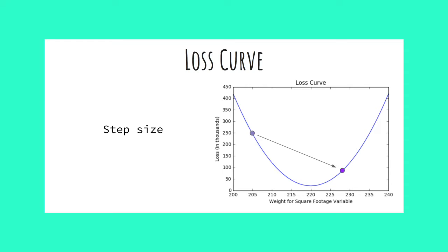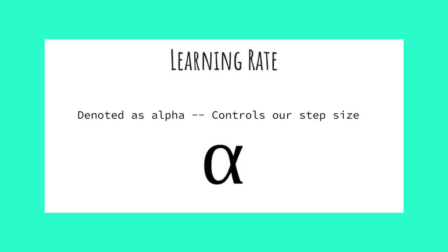The parameter which controls how large of a step we take is called the learning rate. Learning rate is denoted as alpha. This will show up in our gradient descent formula. So let's look at that now.